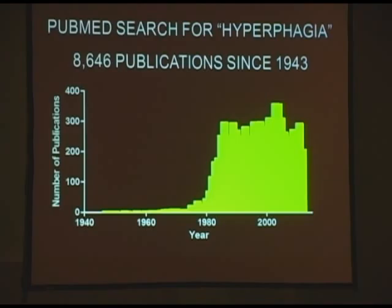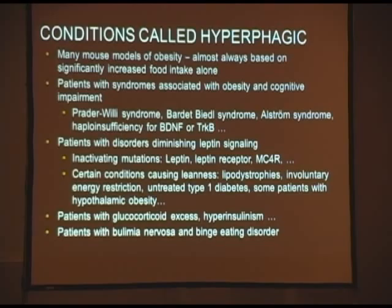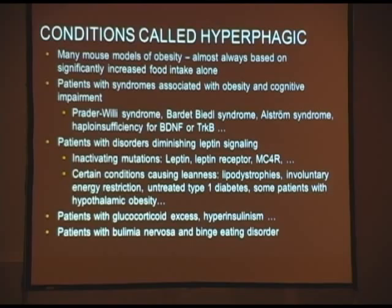When I went to prepare this talk, I thought it would be useful to figure out what was published on hyperphagia. I found about 8,600 papers using the word hyperphagia in PubMed starting since 1943. Clearly people think they know what it means. About a third of these are animal studies, and the vast majority use the word merely to mean overeating. But I thought it useful to make a list of conditions that are called hyperphagic.